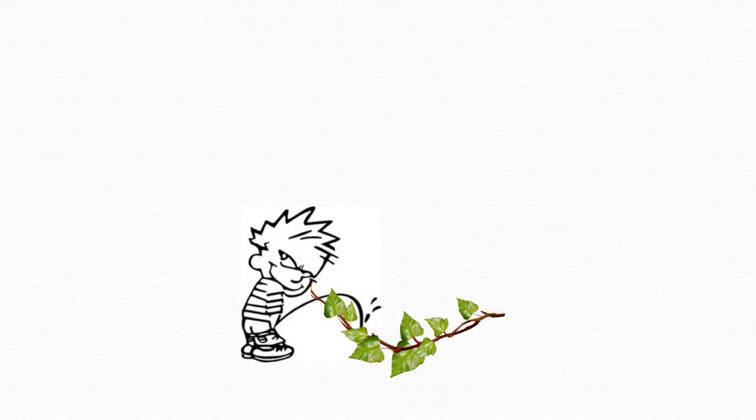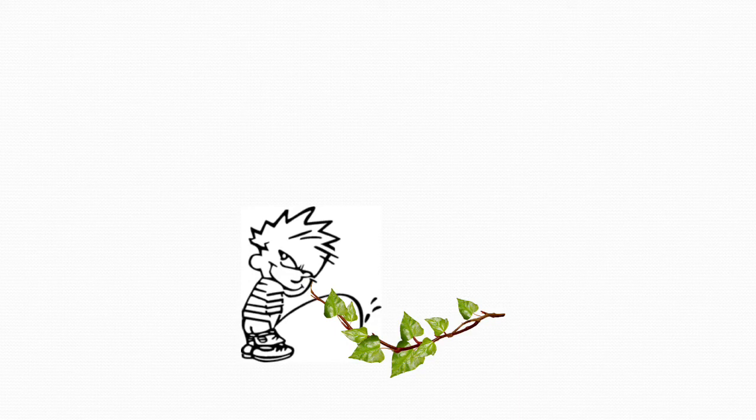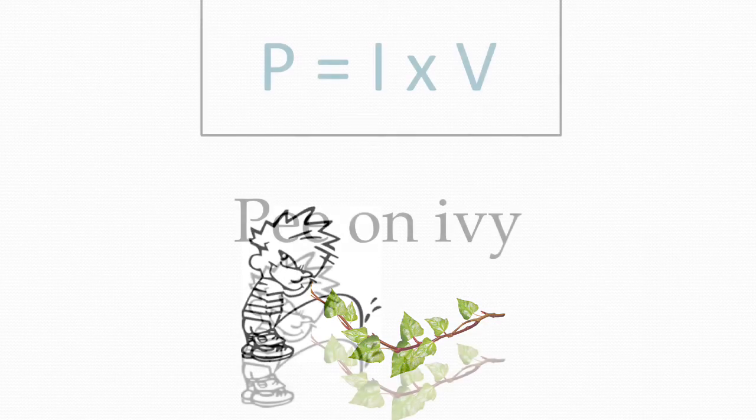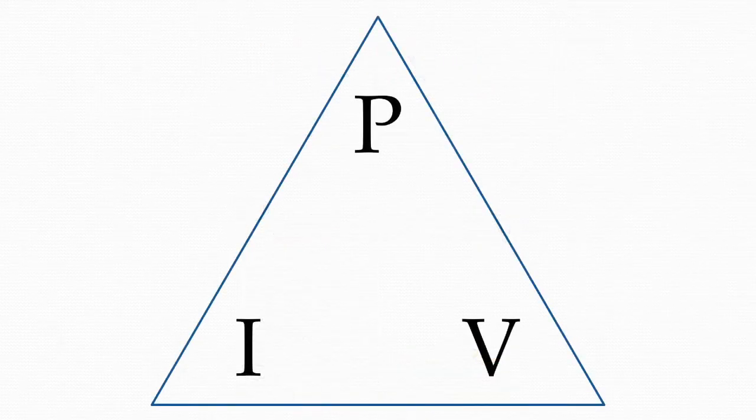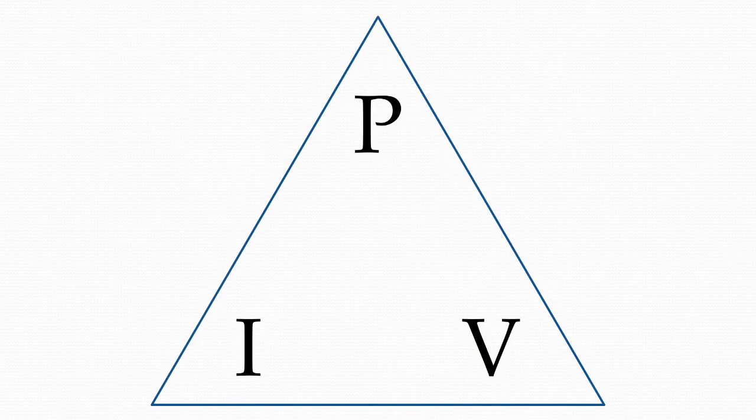And to help you remember the equation, we have this catchphrase. Just say what you see. And it is P on IV. This should help you remember the equation triangle that you need for power. P on IV.